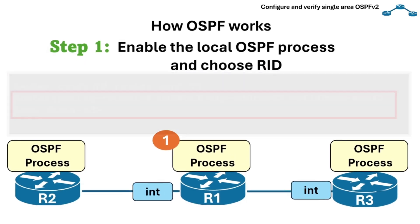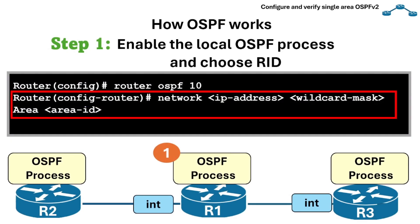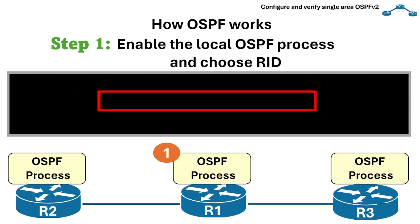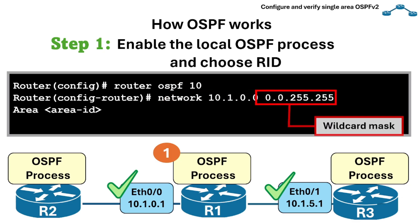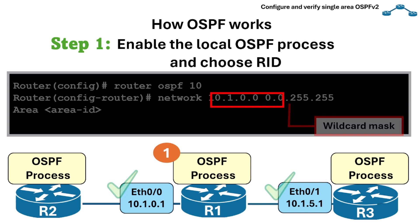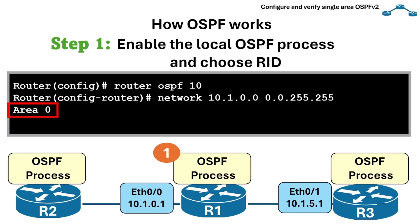We can use the global network area command, which includes interfaces matching the specified network range. This command includes the interfaces that fall within the specified range in the OSPF process, meaning the router starts sending OSPF hello packets to these interfaces. This is the wildcard mask, which is the inverse of the subnet mask, and it also specifies which area the routers will belong to.